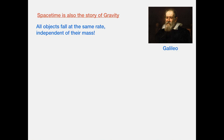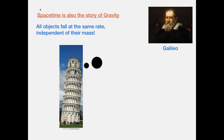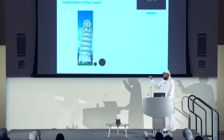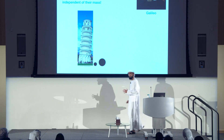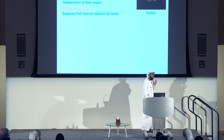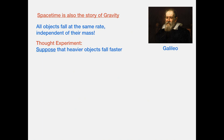Space time is also the story of gravity. Galileo taught us that all objects fall at the same rate, independent of their mass. You might have heard the story that Galileo climbed the Tower of Pisa, took two objects of different mass, and threw them off — and they hit the ground at the same time. Well, this story never actually happened. Galileo was smarter than that; he was able to reason to this conclusion purely from thought.